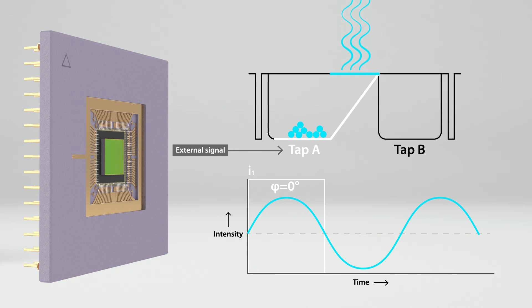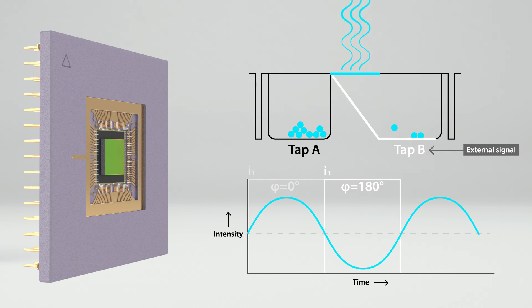At phase 180, tap B is active and all charge carriers go to charge bucket B, resulting in image I3. This kind of charge swing enables the simultaneous record of I1 and I3 in the same camera exposure creating a double image.